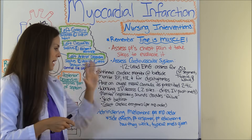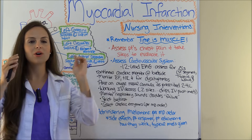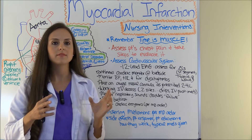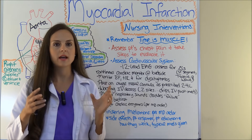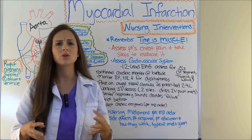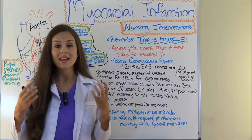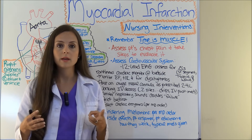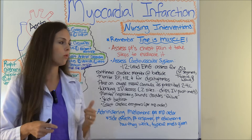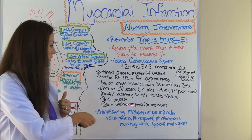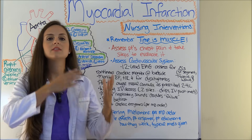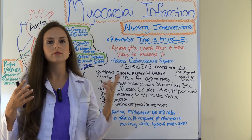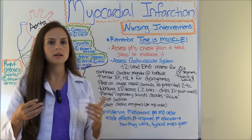Strict bed rest — do not let your patients get up who are having chest pain because getting up will increase that chest pain and make it worse. A lot of patients want to get up, move, pace the floor — they're very anxious and scared. They may need to use the bathroom, so get men a urinal or a bedside commode for women, because moving around puts extra stress on that heart. You're also going to collect cardiac enzymes as ordered, which usually includes troponin levels and maybe CK-MB.